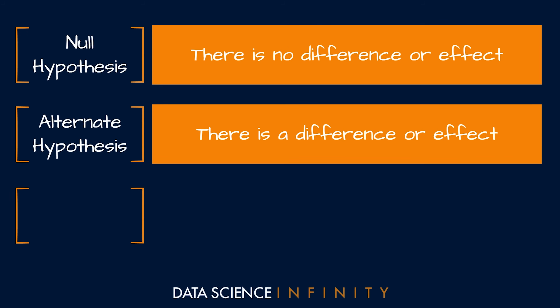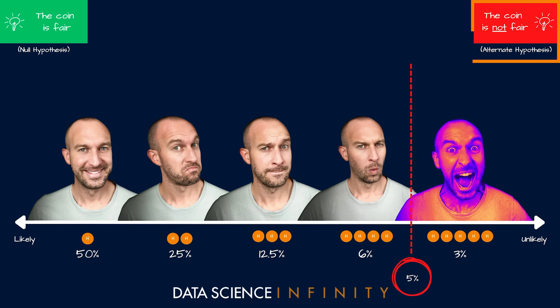Going back to the drug versus placebo example, the alternate hypothesis would be that the two groups see a resulting difference in health — that the drug did have an effect versus the placebo. For the person we will from this point on refer to as Dishonest Pete, the alternate hypothesis was that something untoward is going on with that coin — that his coin is not fair and is somehow biased toward heads.